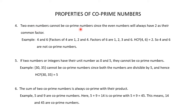Two even numbers cannot be co-prime numbers, since even numbers will always have 2 as their common factor. For two numbers to be co-prime, their HCF should always be 1. Consider the two even numbers 4 and 6. The factors of 4 are 1, 2, and 4, and the factors of 6 are 1, 2, 3, and 6. So the HCF of 4 and 6 is 2, not 1. Therefore 4 and 6 are not co-prime, and two even numbers can never be co-prime.